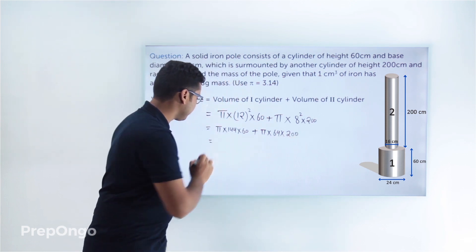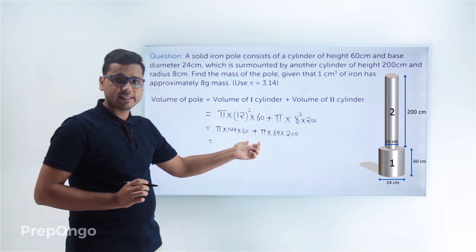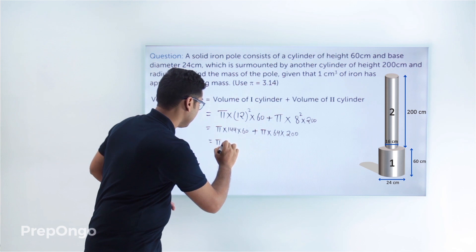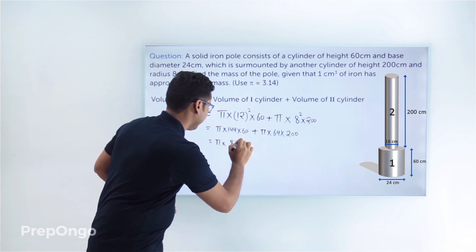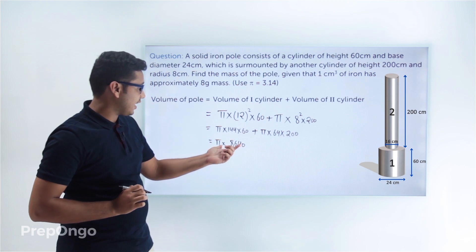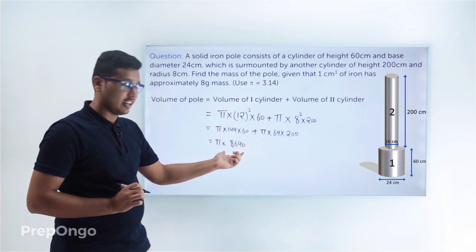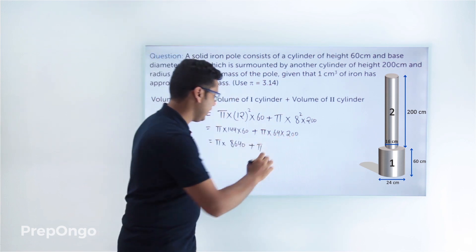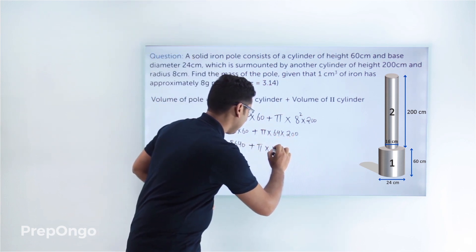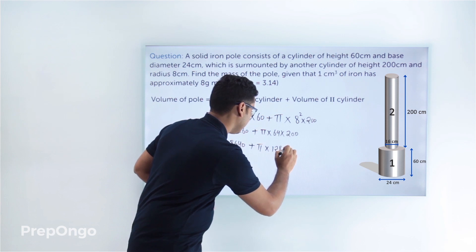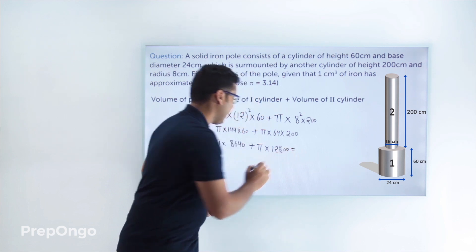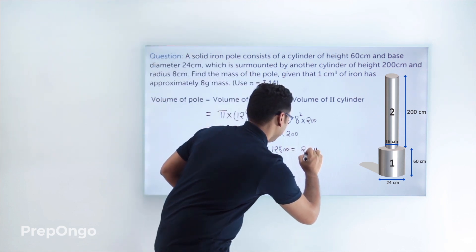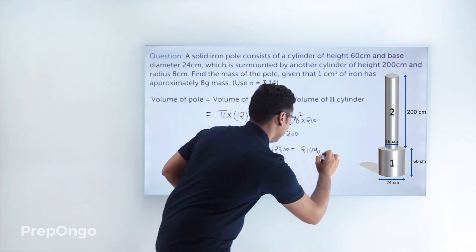Multiplying out: 144 × 60 = 8640, giving π × 8640. And 64 × 200 = 12800, giving π × 12800. Adding these two values together gives a total volume of 21440π cubic centimeters.